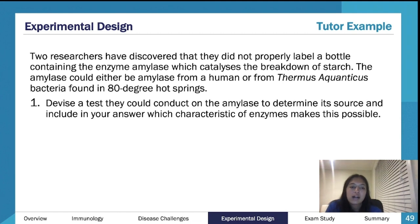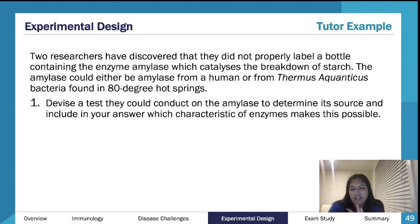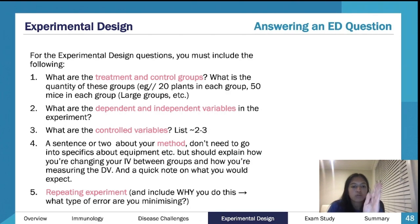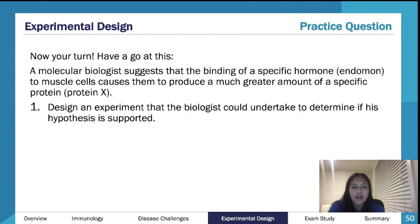Controlled variables would include the amount of amylase used and the amount of starch used. For the method, you might leave it for 10 minutes and check the glucose reading every two minutes. You would also repeat the experiment. Follow this structure and you cover the main components of the answer.